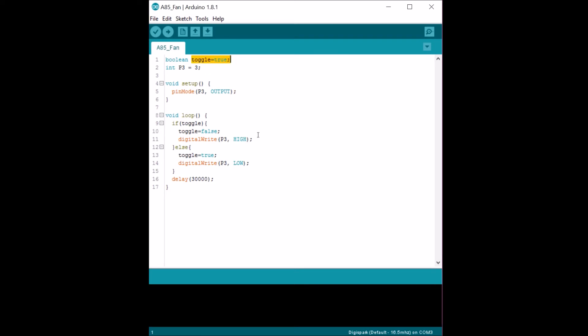So we have a toggle. If it's true, it turns on the fan. If it is false, it turns off the fan. So the pin we're going to use is P3. In the setup, we just give the P3 as our output.